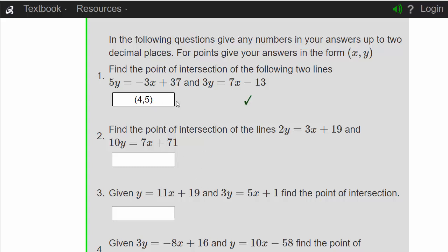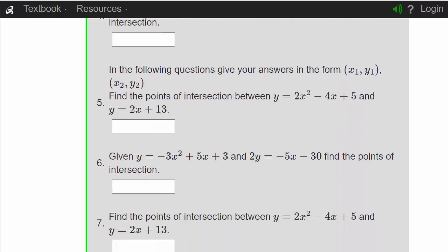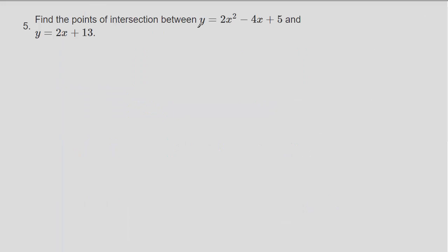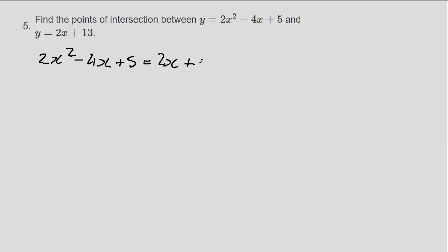Questions 2, 3, and 4 are very similar to question 1 so I won't do those. Moving on to question 5: find the points of intersection between this quadratic and this straight line. In this example, y equals the quadratic and y also equals a straight line, so we can write 2x squared minus 4x plus 5 equals 2x plus 13.